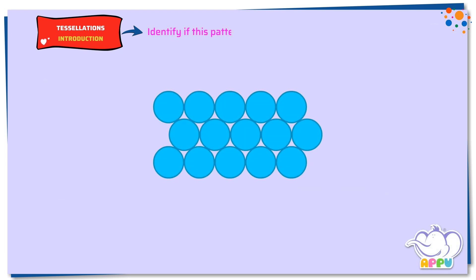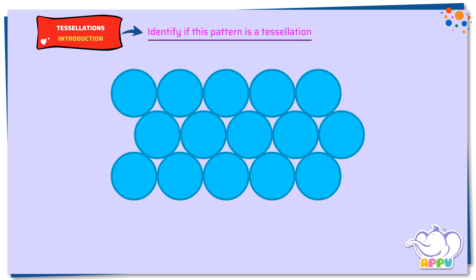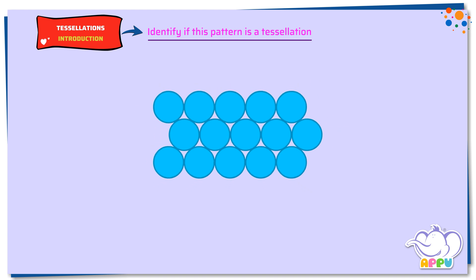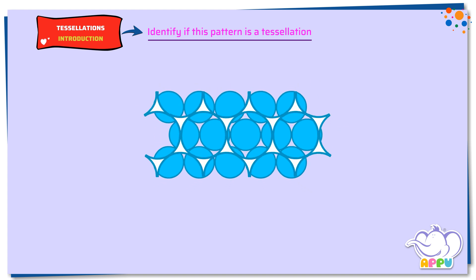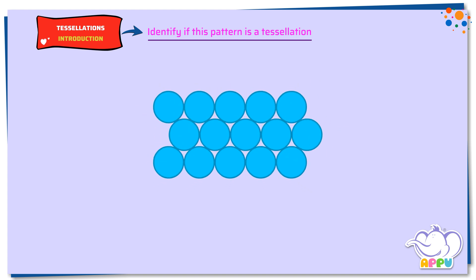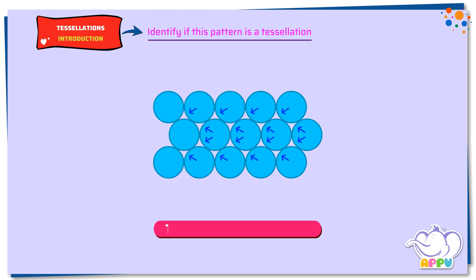Identify if this pattern is a tessellation. Here, even though the circles are repeating, there are gaps in between and they do not fit together. So this is not a tessellation.